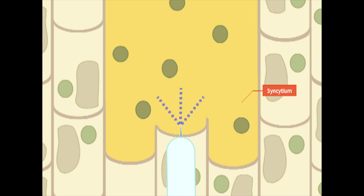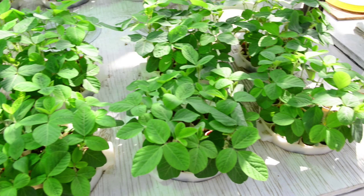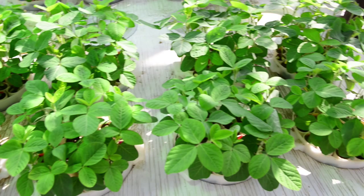As the now immobilized nematode feeds, it drains life-sustaining nutrients from the feeding cell, eventually damaging the root's ability to supply nutrients to the plant above.